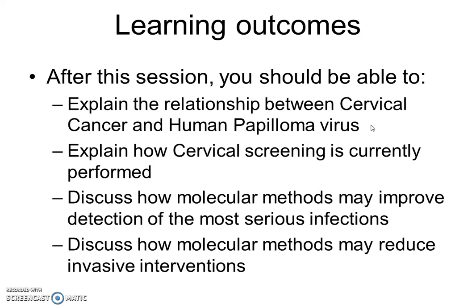The key points we'll cover include: an overview of the relationship between cervical cancer and human papillomavirus, where most cervical cancers contain the virus but only specific types. We'll go over the current cervical screening program, how it identifies cancer cases but with a low positive predictive value, generating many false positives who come back for unnecessary follow-up. We'll then look at how molecular methods, focusing on hybrid capture and allele-specific PCR, can improve upon this.